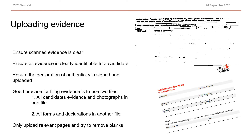When uploading evidence to the portal, firstly ensure scanned evidence is clear. Unfortunately and fairly frequently, we see evidence written in pencil, scanned at 300 dpi, and when uploaded to the portal you can't see anything written on it. This can have an impact on a candidate. Ensure all evidence is clearly identifiable to a candidate. Ensure the declaration of authenticity is signed and uploaded, because none of the evidence can be viewed unless the declaration is in place. Good practice is to use two files — one for all candidates' evidence and photographs, and another for all the forms and declarations. Only ever upload relevant pages and try to remove blank pages.